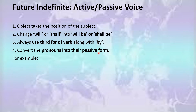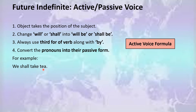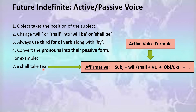Let's take an example. Following the active voice formula, the active voice sentence of future indefinite tense has been written. Now we are going to convert it into its passive voice form following all four rules. First, we shall change the position of subject and object. Then we will add 'will be' or 'shall be'. Then we will add the third form of the verb along with 'by', and then we will change the pronouns.